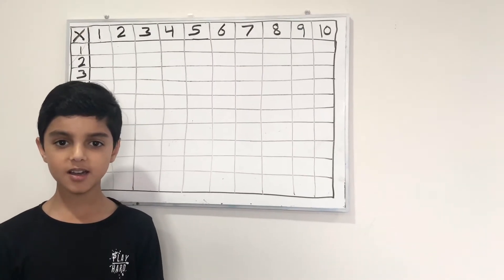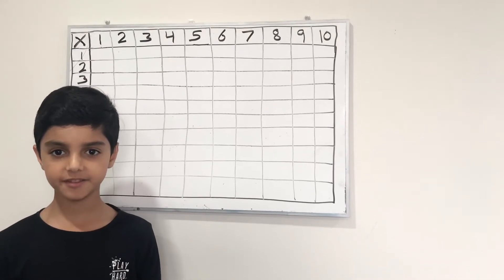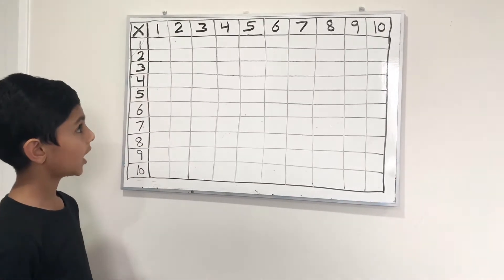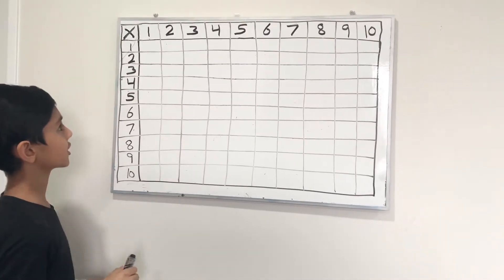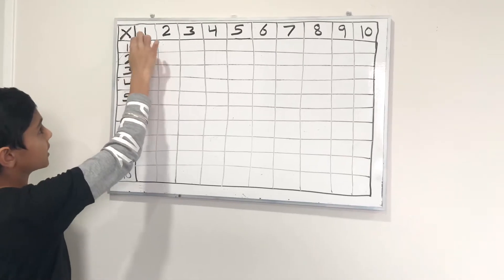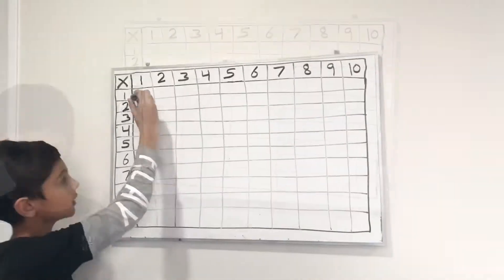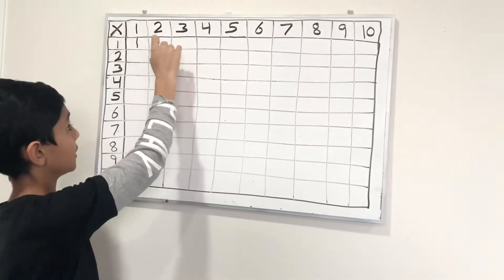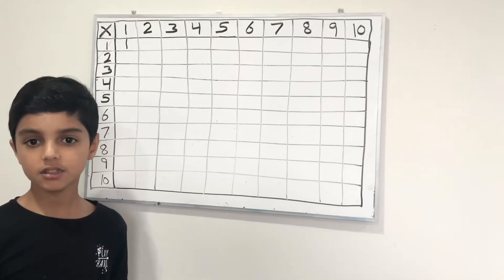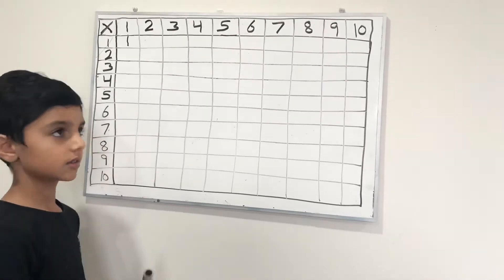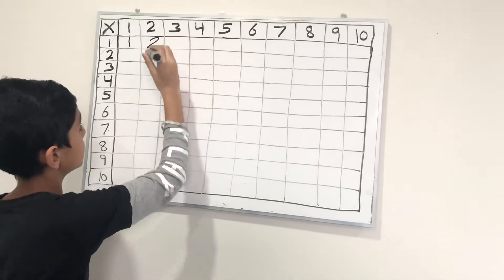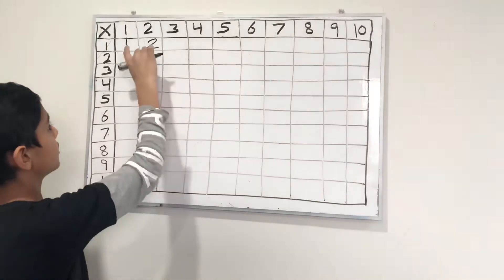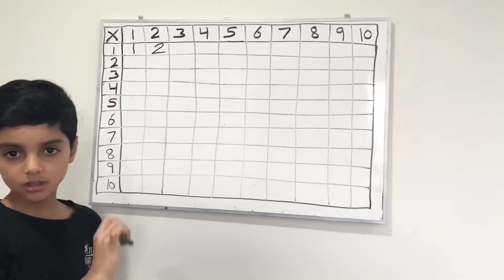Hi, today we will do a multiplication grid. Here is a grid for the table of 1. The answer is the number that you multiply it with. For example, 1 multiplied by 1 is 1, so I write a 1 here. Now let's multiply 1 with 2, which is 2, and similarly you can write all the numbers of the table of one.